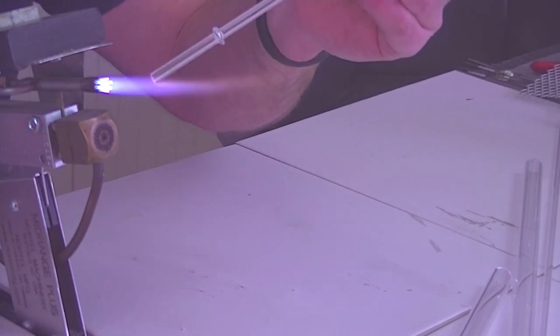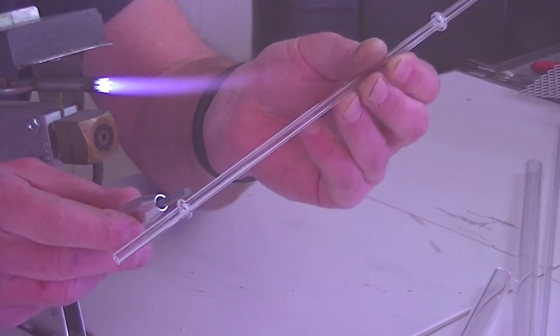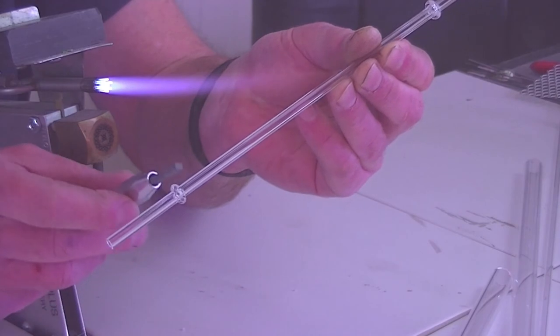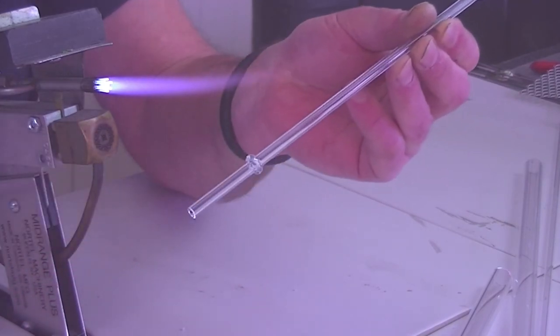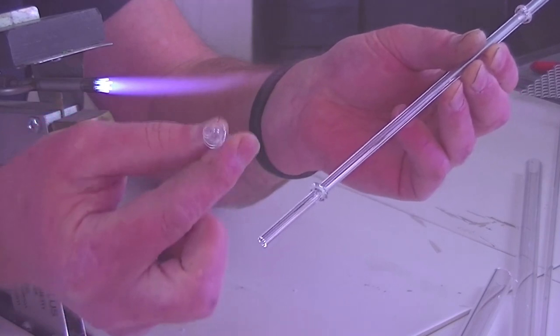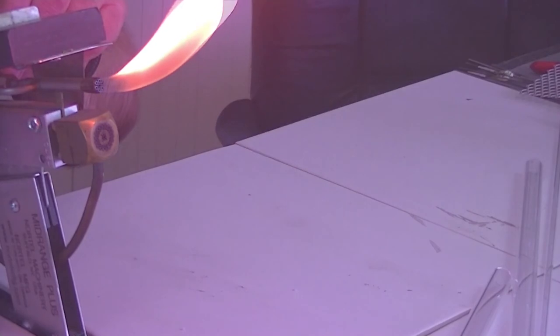Now when this cools down, again using the tungsten knife, just score it across the top, around about 5mm, snap it, flame it, and what you'll end up with is this little wick holder. If I can turn that off now.